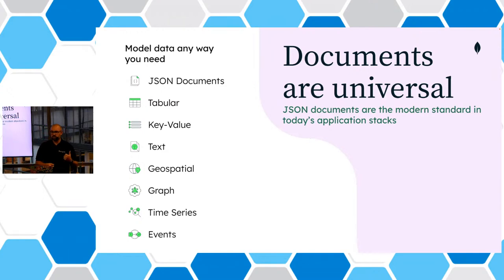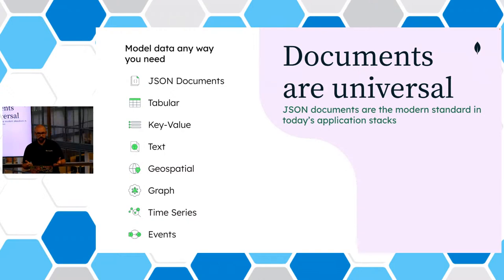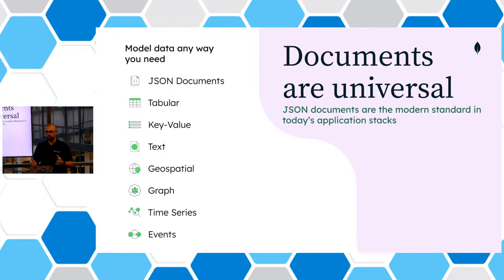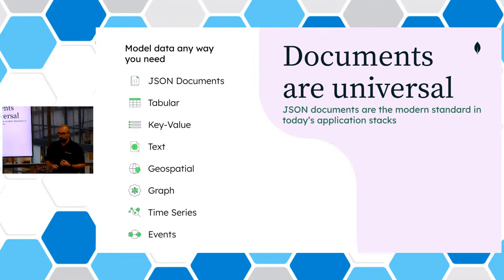We can store raw text, and we can also store geospatial data. If you have a geospatial use case — for example, storing the location of a specific device, or locations of restaurants or apartments — MongoDB has support to understand and allow you to query from a geographical perspective. You can ask for all data points within a certain range of a specific location, within a certain sphere of influence, or even within a specific shape, like a country on a map, directly in the database.